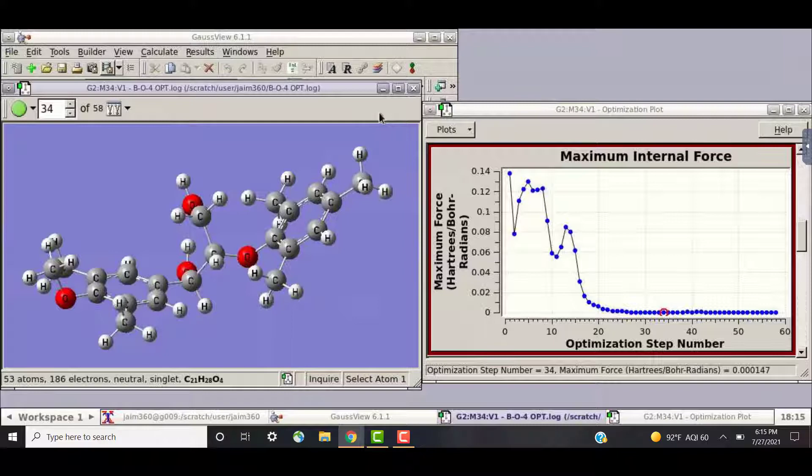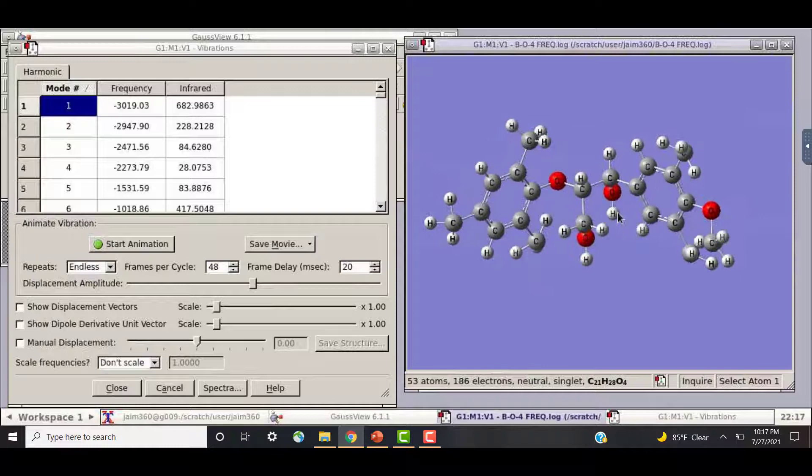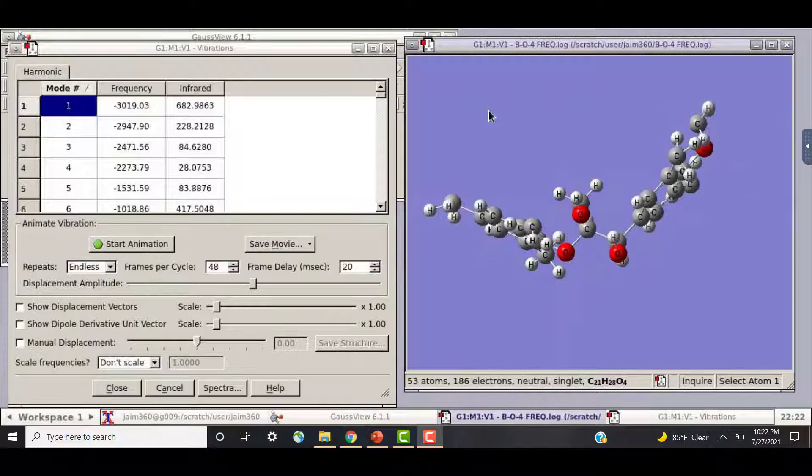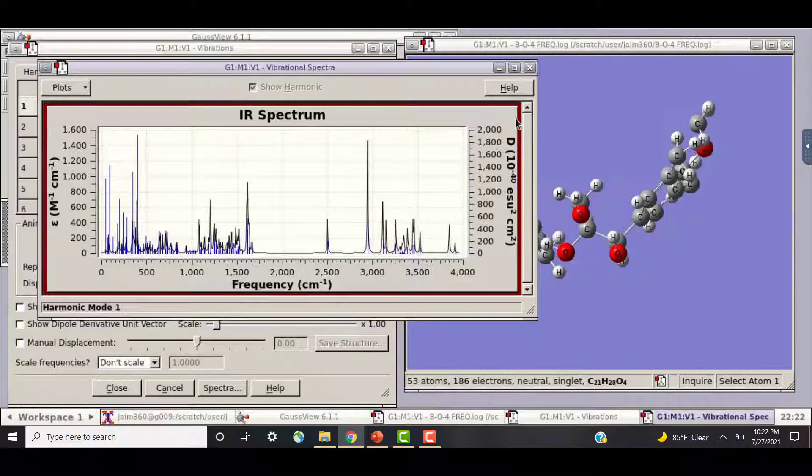Here we have the quantum chemistry dynamics in terms of vibrations and frequencies. We can also see here the infrared spectrum, which is essentially the interaction of infrared radiation with matter by absorption, emissions, or reflections.